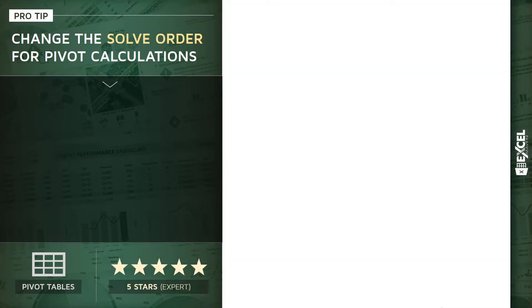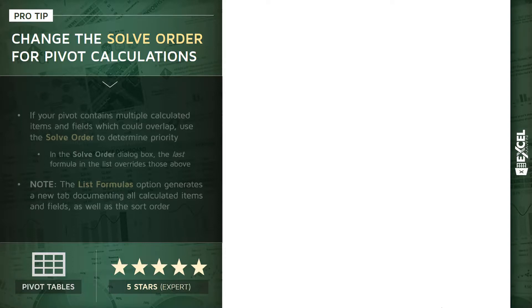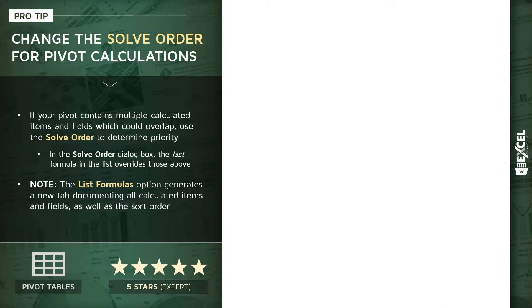For this pro tip, I want to talk about changing the solve order to prioritize your pivot table calculations. This is a five-star expert level tip — odds are this is something you may never need to use, but it's a helpful tool to have in your back pocket just in case. This comes into play when your pivot table contains multiple calculated items and fields that could potentially overlap. In those cases, you'd use the solve order dialog box.